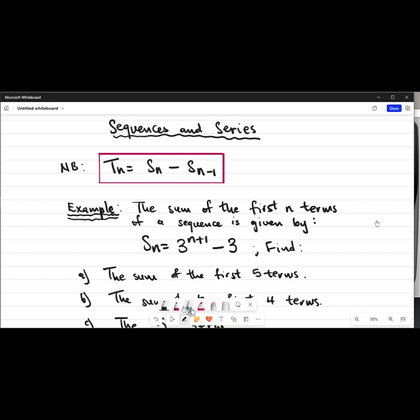Here is a formula I want you to know. Whenever you are looking for a certain term, we always take the sum of that term minus the previous one. Now what do I mean? Let's say we were looking for term number 10. What happens is you take the sum of the first 10 terms...